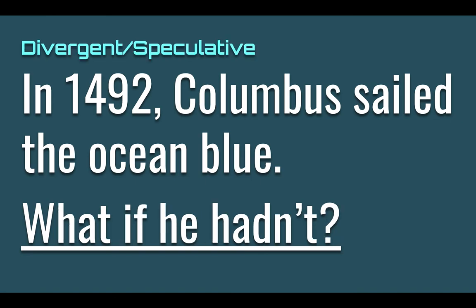This gets us into the speculative realm. We've done the memory, the convergent, and evaluated whether Columbus sailing the ocean blue was a good or bad thing. Now we ask a divergent or speculative question: in 1492, Columbus sailed the ocean blue — well, what if he hadn't? Maybe somebody else would have. Or maybe Columbus did sail but was a nicer guy, motivated by exploration. What would have happened to civilizations in the Western Hemisphere if they'd been allowed to continue developing free of European interference? Those are examples of how you use the four levels of questions with a thinking triangle.